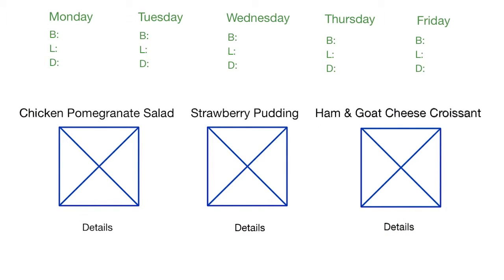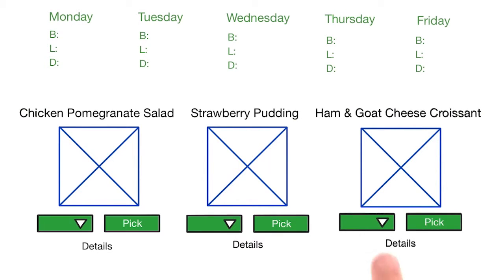We also need a way to let users choose the item and the meal. So let's add a dropdown with options for breakfast, lunch, and dinner, and a choose button.